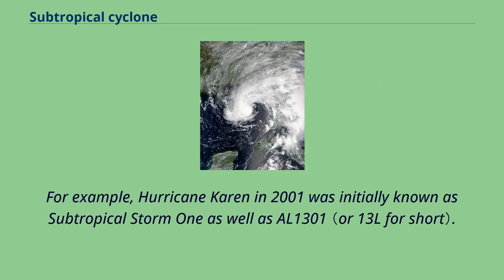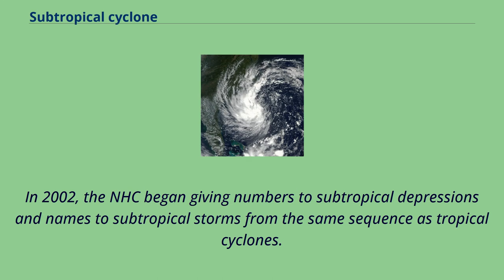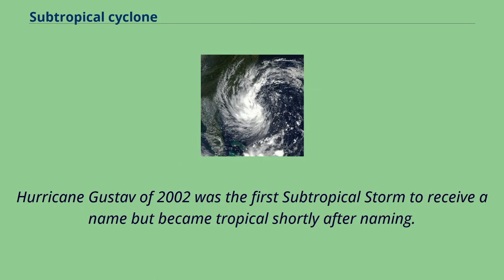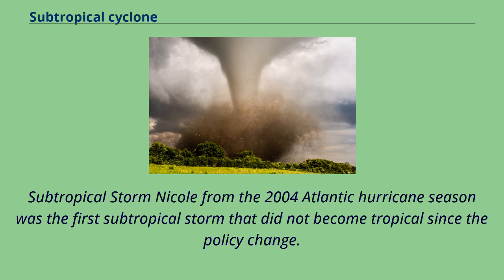For example, Hurricane Karen in 2001 was initially known as subtropical storm 1 as well as AL-1301. In 2002, the NHC began giving numbers to subtropical depressions and names to subtropical storms from the same sequence as tropical cyclones. Hurricane Gustav of 2002 was the first subtropical storm to receive a name but became tropical shortly after naming. Subtropical Storm Nicole from the 2004 Atlantic hurricane season was the first subtropical storm that did not become tropical since the policy change.